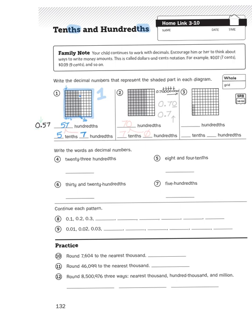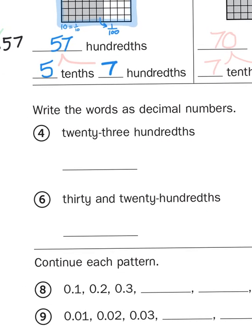Now let's look at problems four through seven. They are just expressing a decimal amount in word form and all you have to do is translate that into number form. For example, '23 hundredths' tells me there is no whole number and 23 parts that were divided into 100 parts, so 0.23 — a fractional amount.